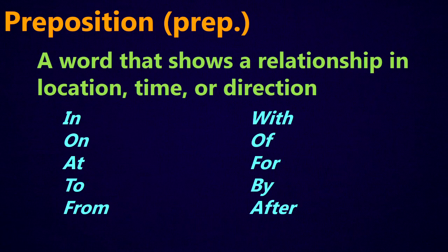The second group are prepositions. Prepositions are a closed group — no new prepositions are coming into English. A preposition is a word that shows a relationship in location, time, or direction. The most common prepositions are in, on, at, to, from, with, of, for, by, and after.